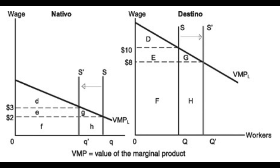Let's begin our analysis from the neoclassical model of the labor market. According to this model, the impact of migration streams in the source and receiver country are very different. When migration occurs, the native workers in the receiver country suffer welfare losses, and the newcomers — compared to their wages in their native country — enjoy higher earnings. From an employer perspective in the receiver country, the labor pool expands, which translates into a broader choice of employees for business owners.